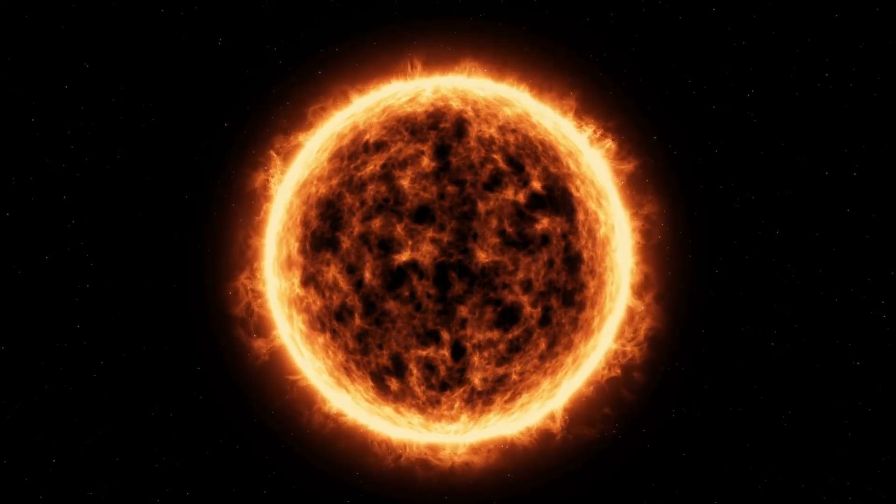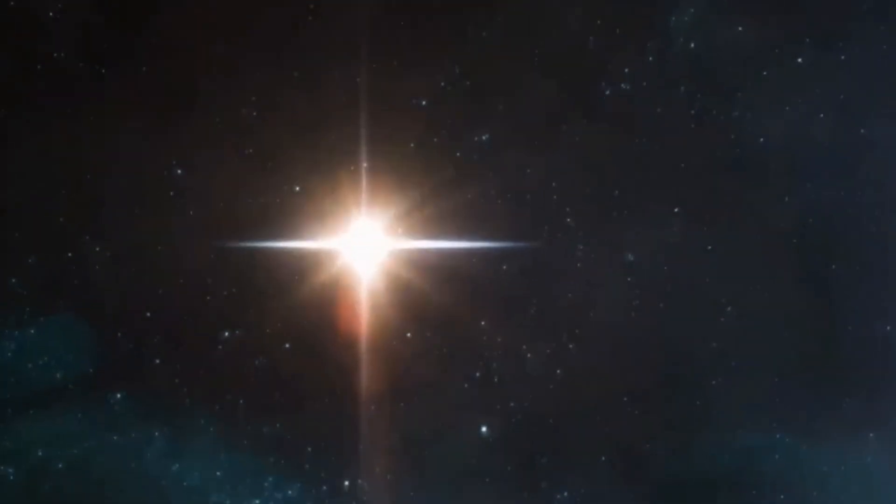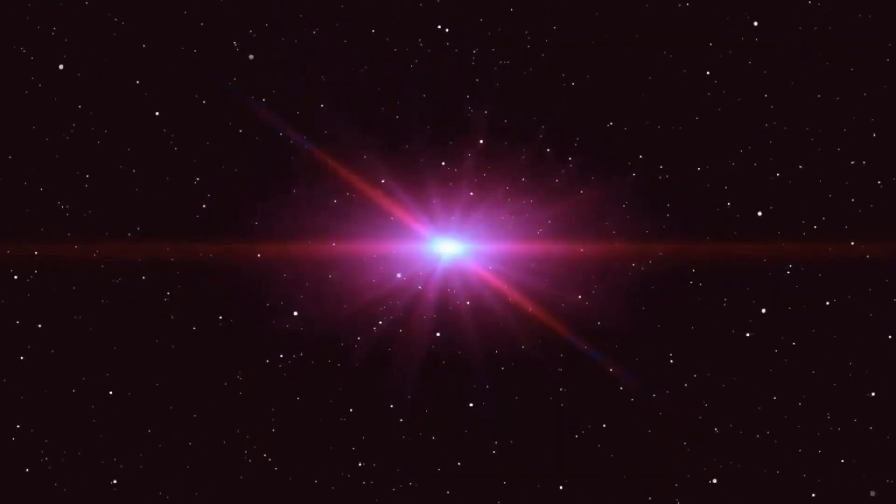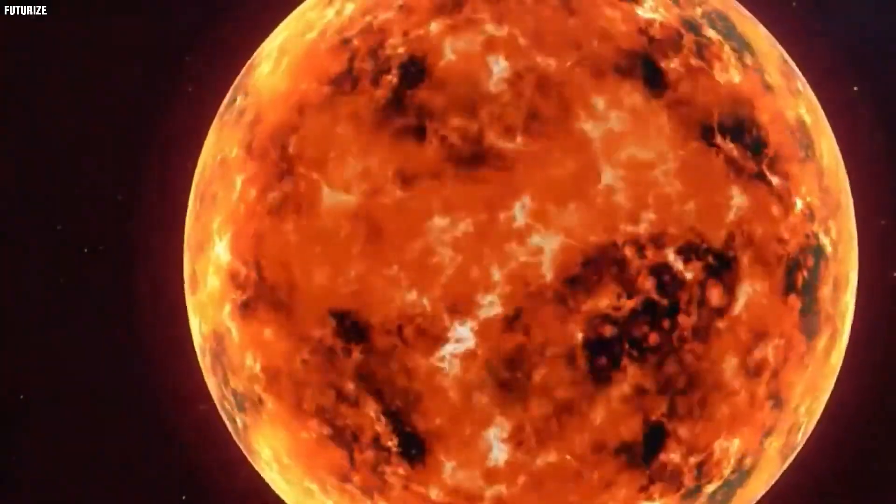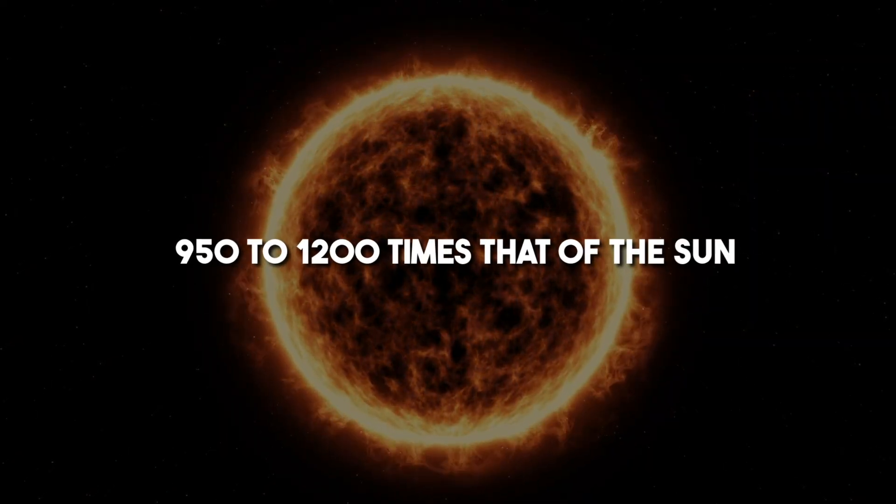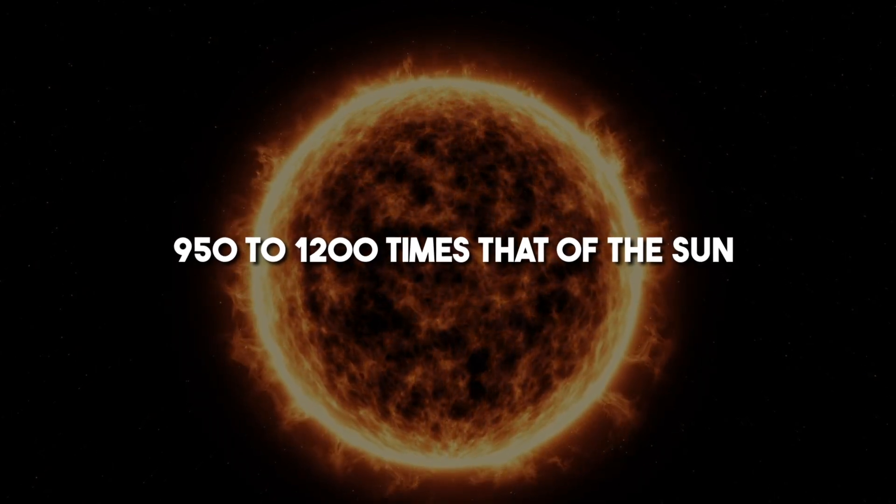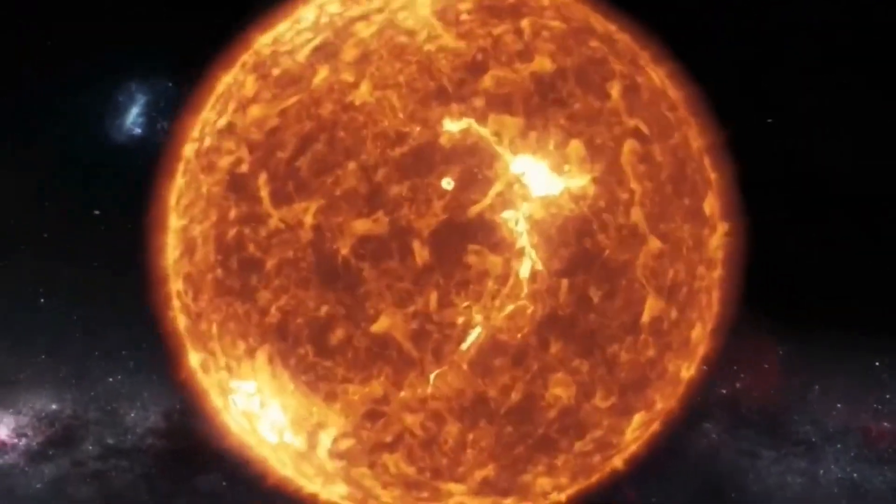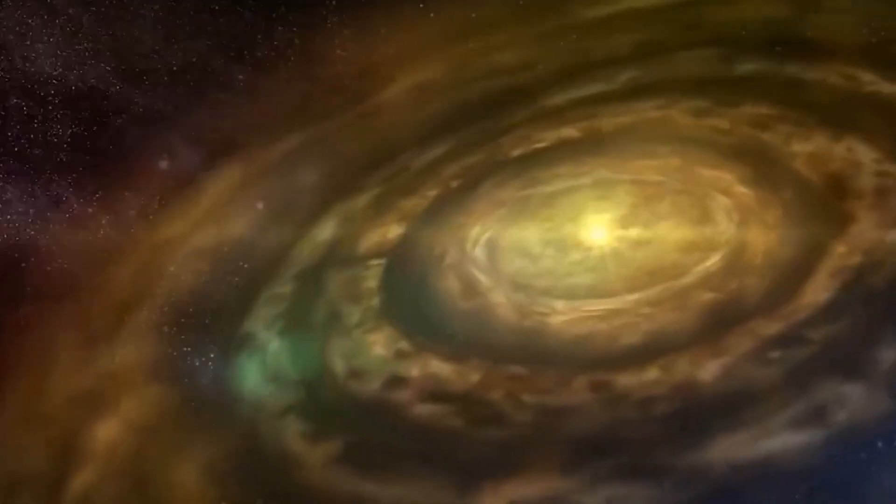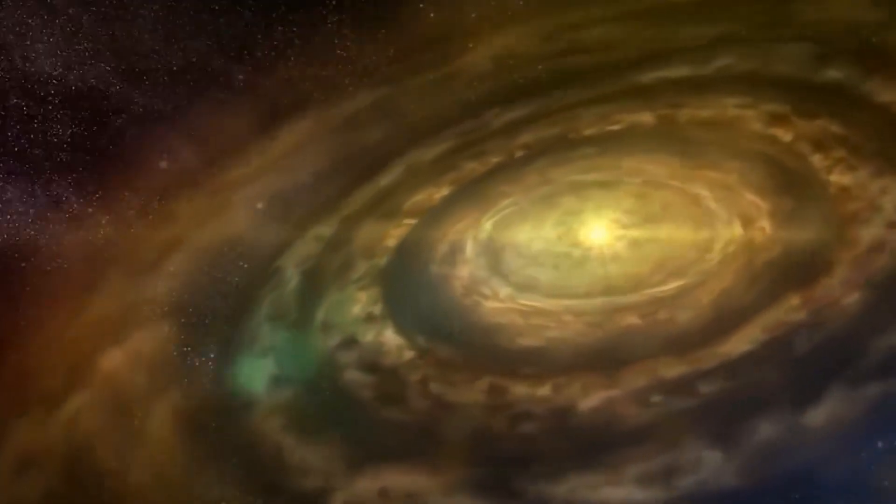It's way younger than that of our sun. However, there is another aspect that we need to look into, which is the size comparison. Betelgeuse is approximately 950 to 1200 times that of the sun. In simpler words, if Betelgeuse were to replace the sun in our solar system, it would span to Jupiter.